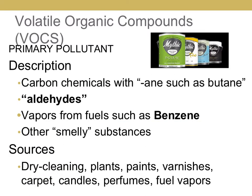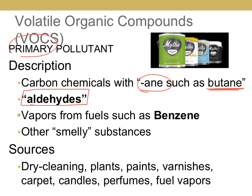The next one is VOCs — volatile organic compounds. There are all kinds of them. Volatile means easy to become a gas. VOCs are primary pollutants, so make sure you mark that down. You need to know that fuels or carbon chemicals that end in -ane, like butane, are VOCs. You also need to know that aldehydes are VOCs — sometimes on the AP test they'll just have a question with the word 'aldehyde' and expect you to know that an aldehyde is a VOC. That was on a recent released AP test.